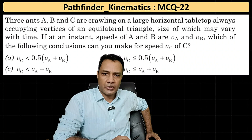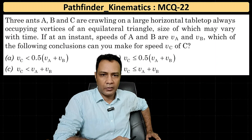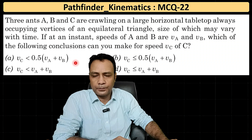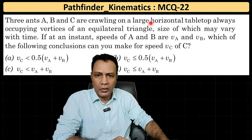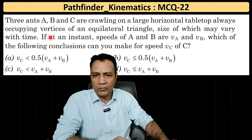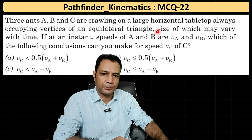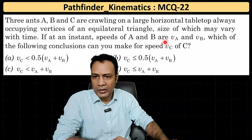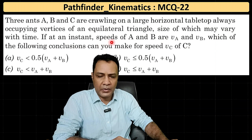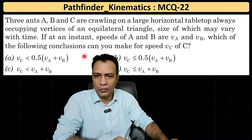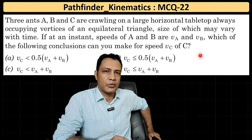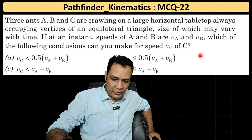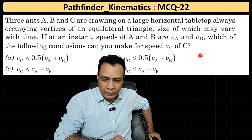Here's a very challenging problem of kinematics from Pathfinder — MCQ question number 22. The question states: three ants A, B, and C are crawling on a large horizontal tabletop, always occupying the vertices of an equilateral triangle whose size may vary with time. If at an instant the speeds of A and B are va and vb, which of the following conclusions can you make for the speed vc of C? Four options are given.